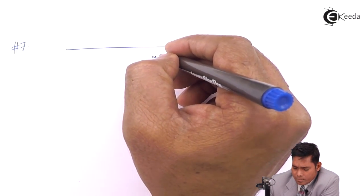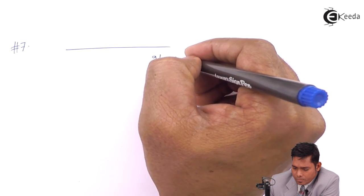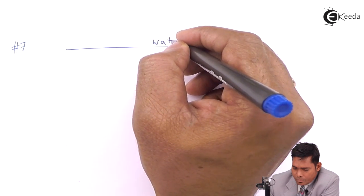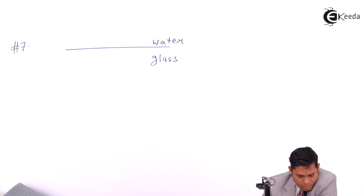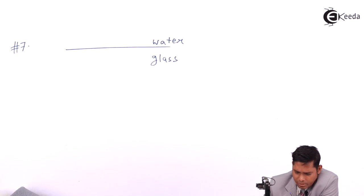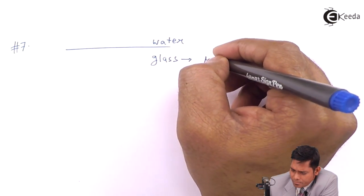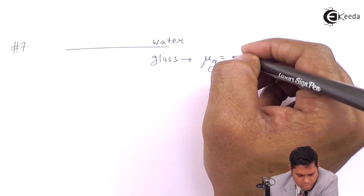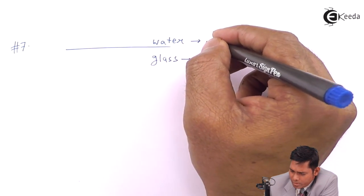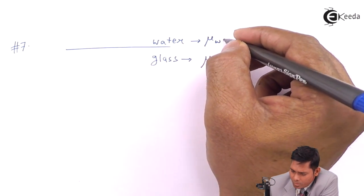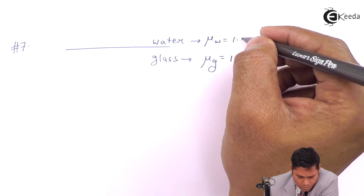This is about glass and water interface. The refractive indices of glass and water are respectively - for glass, the refractive index is 1.62, obviously glass is more denser optically. This is 1.32.